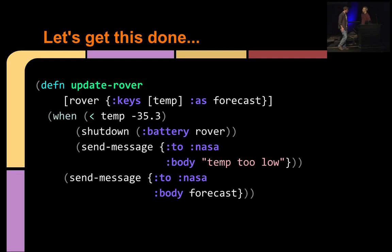Let's see. What am I supposed to say about this? We've got a function, update rover, that takes two parameters: rover and this forecast thing. That looks like a weather forecast because we're going to pull the temp out, do a little check on it. If the temperature is too low, we're going to shut down the battery and send a message to NASA. And then regardless, we're going to send the forecast to NASA anyway. You can understand that code. You do know Clojure.